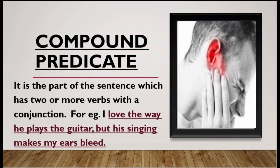The third and last type is compound predicate — it is the part of a sentence which has two or more verbs joined by a conjunction. A compound predicate occurs when multiple verbs apply to the same subject and are connected with a conjunction, which is also called a compound verb. For example: 'I love the way he plays the guitar but his singing makes my ears bleed.' Here, verbs like 'plays' and 'makes' are joined by the conjunction 'but,' and prepositional phrases provide more information about what the subject is doing.